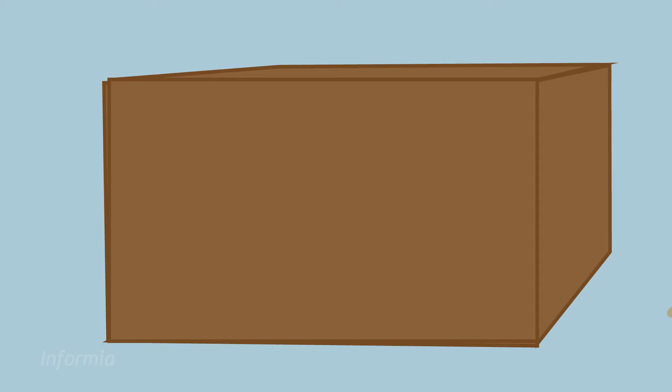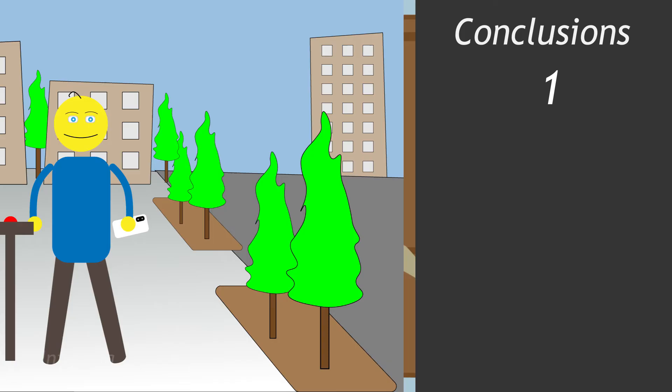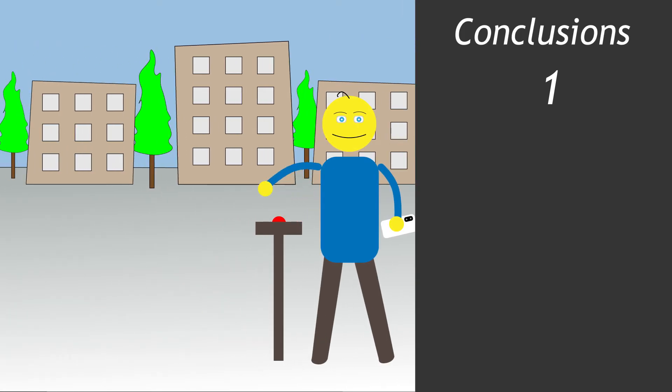Skinner repeated the experiment multiple times with various different animals. He came up with these conclusions. You can condition creatures to make a specific choice if you award them with a small reward, and that works with humans, too. This is called operant conditioning.